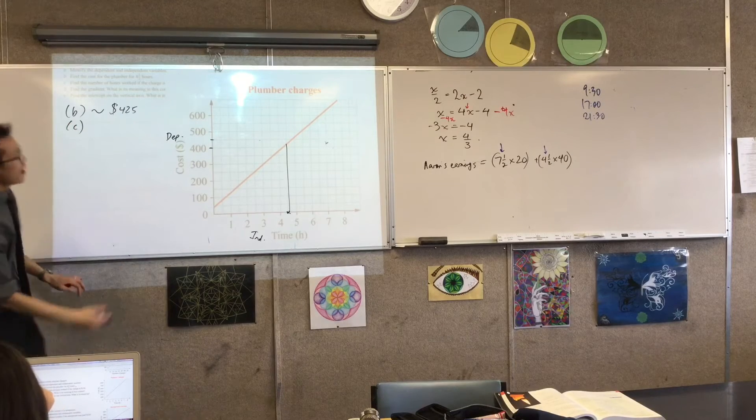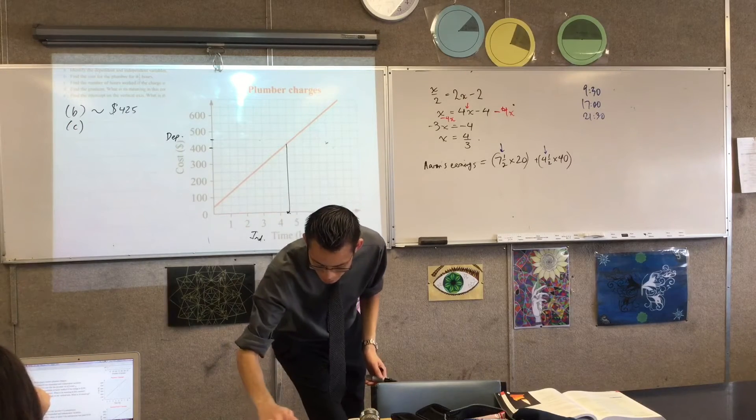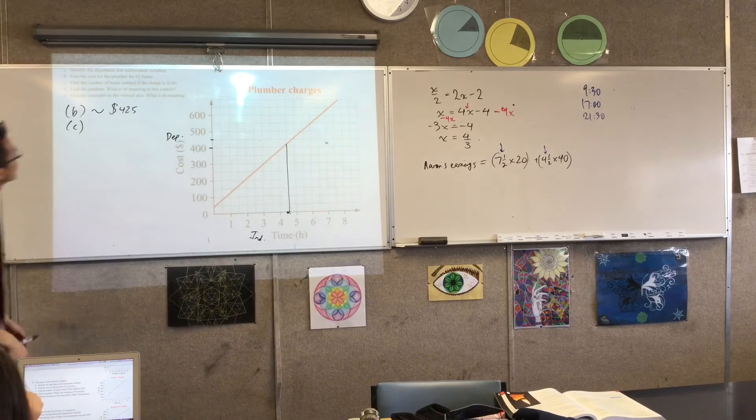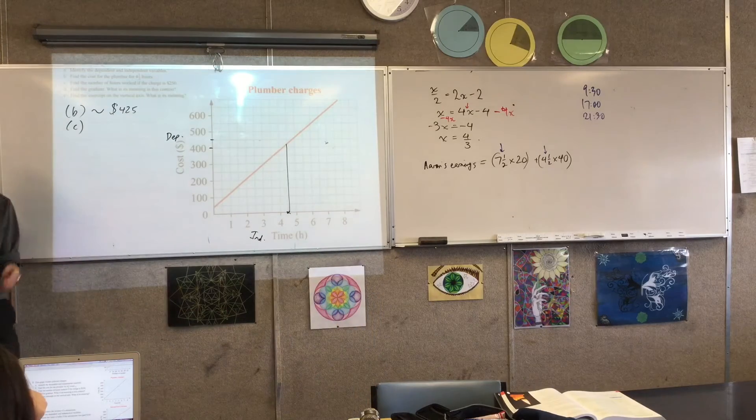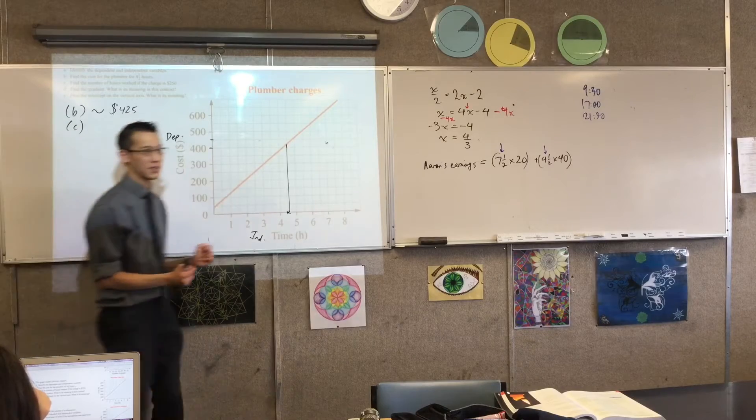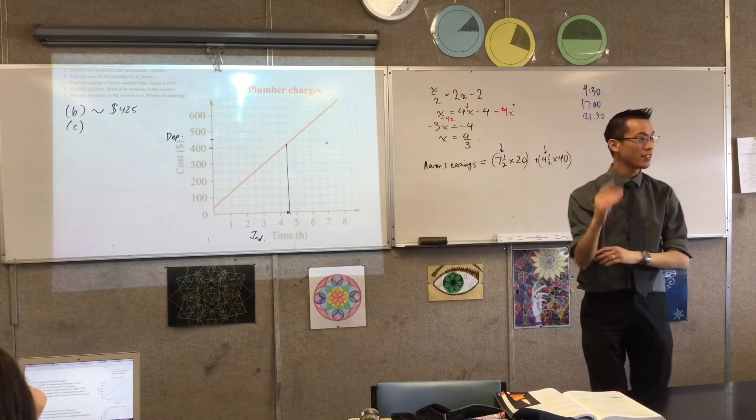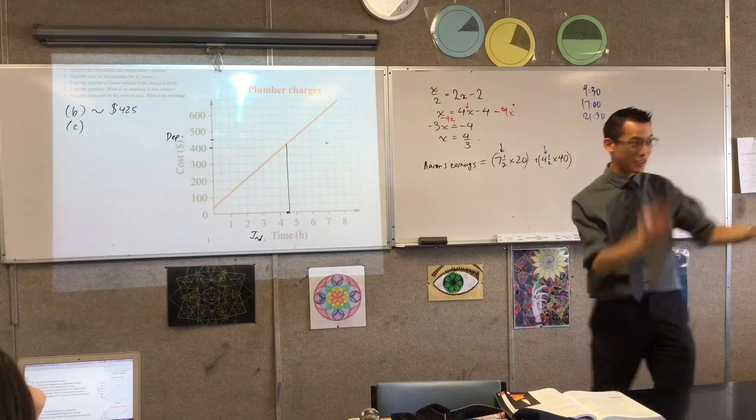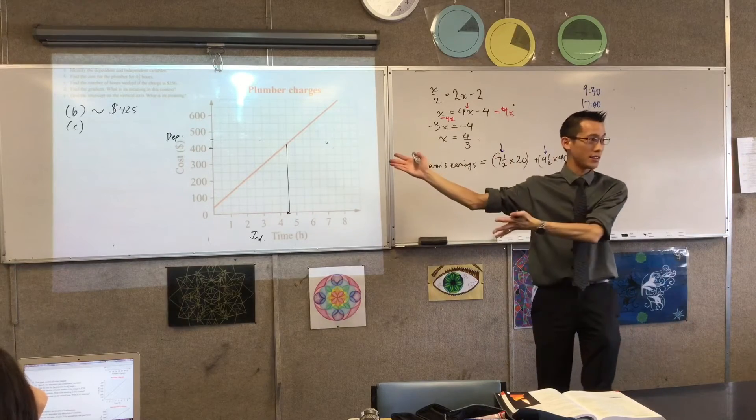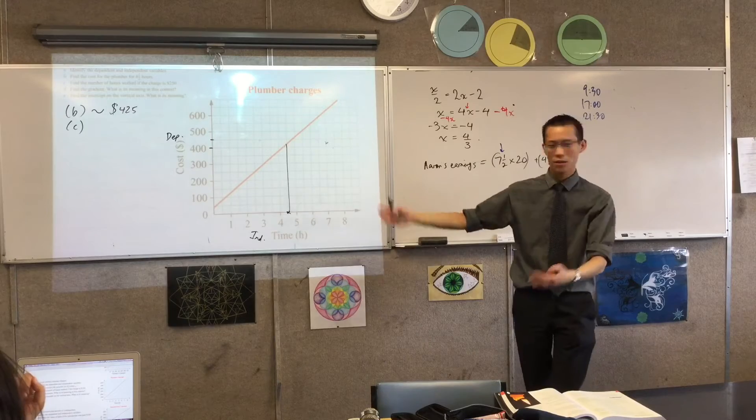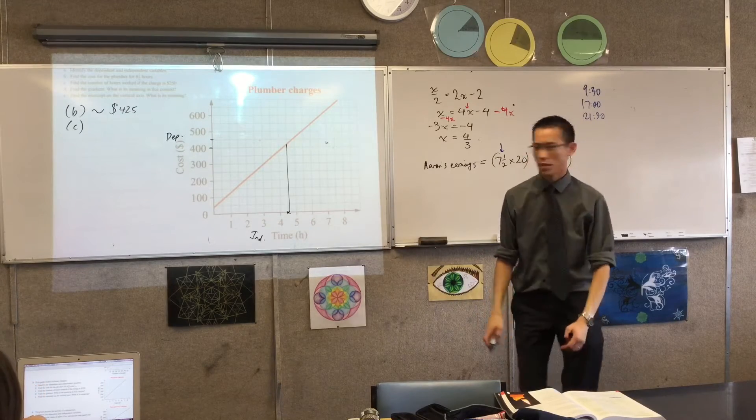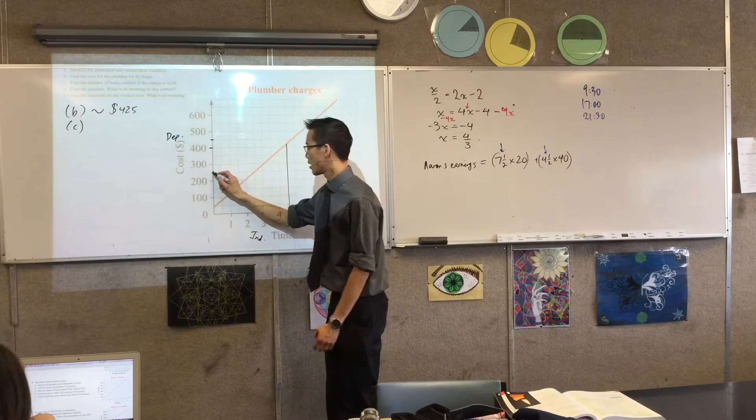Okay. Part C. Find... Let me uncover it. Find the number of hours worked if the charge is $250. So, now where I'm looking, which axis? Yeah, the cost axis, the vertical one. Now, we do tend to call it y. We usually label that, but it's not the y axis here. So, we want to use the right language for the right question. 250, where's that? That's here.